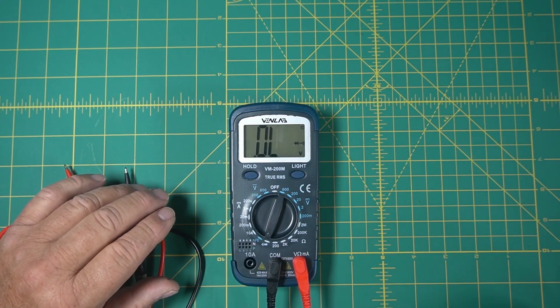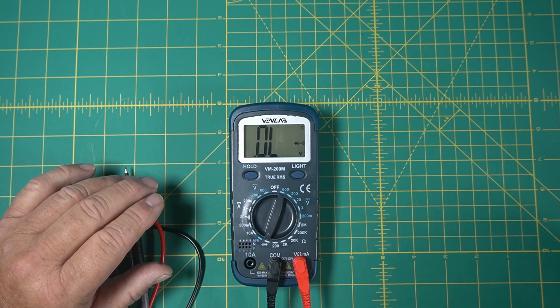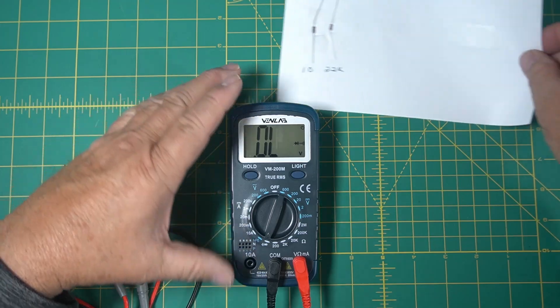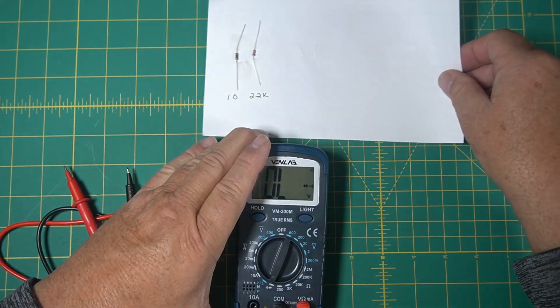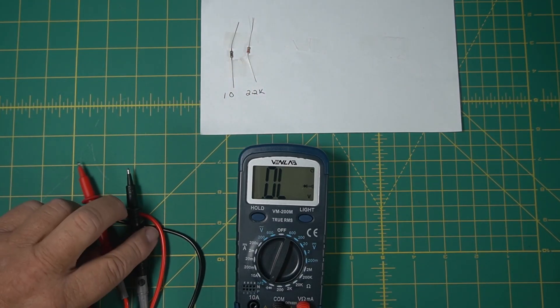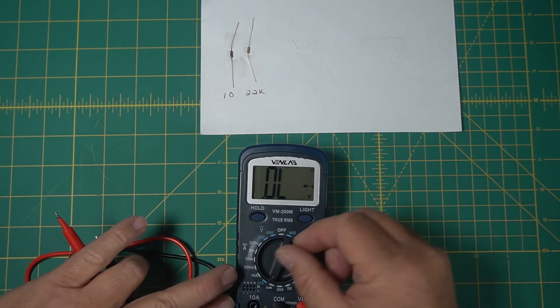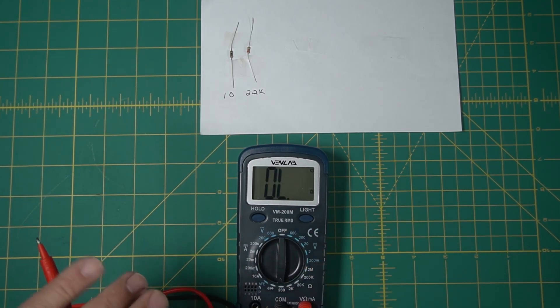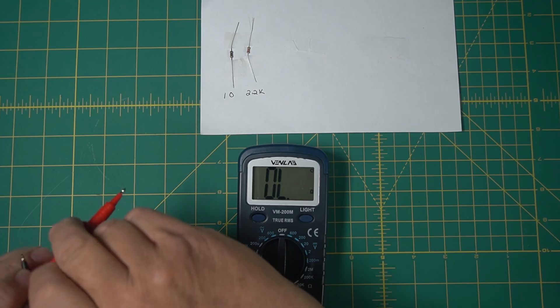I've got some little props here guys. I don't have any of the fancy things to check things with, but I do have this. I've got a 10 ohm resistor and a 2.2K. So let's go to 200 ohms. Let's see if it'll read the 10.